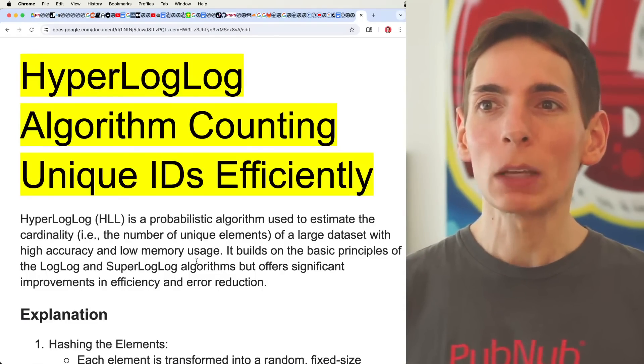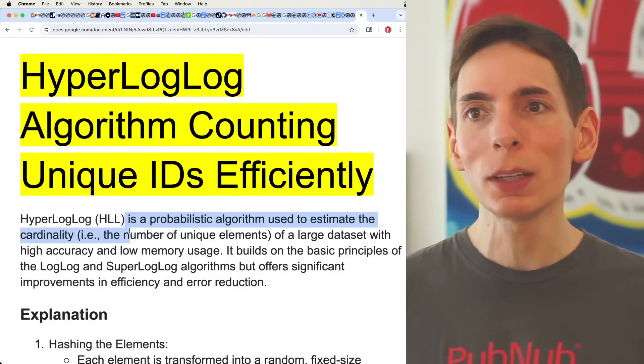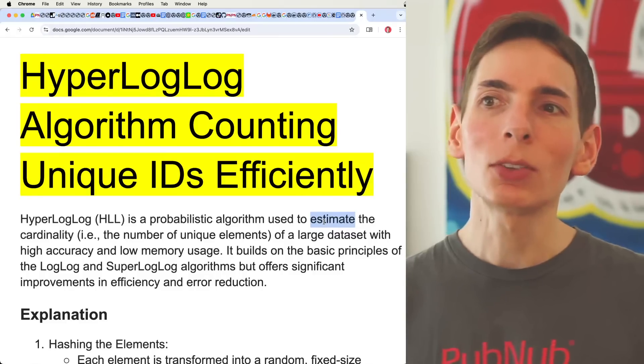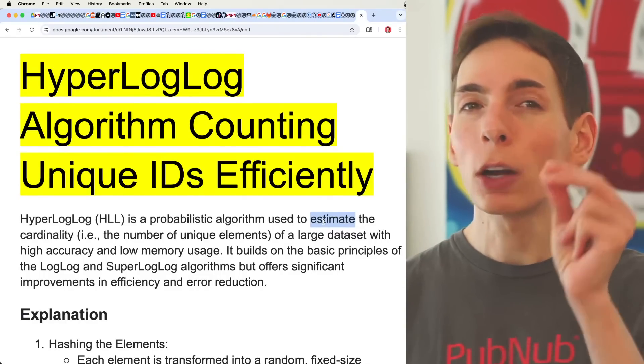So essentially, HyperLogLog is a probabilistic algorithm used to estimate cardinality. Keyword is estimate because it's statistical, probabilistic, and it's not going to get 100% perfection.